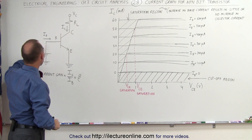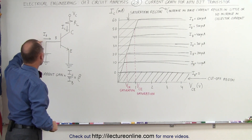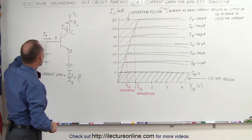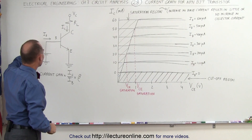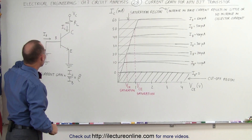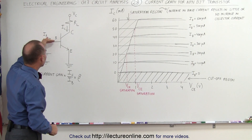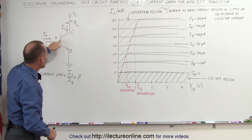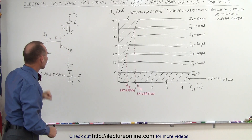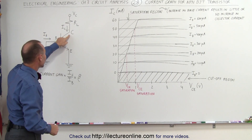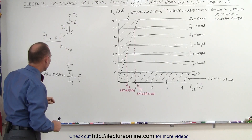We also have a voltage applied to the base current, so we can control the base current. And as we increase the base current, we'll increase the current from the collector to the emitter.